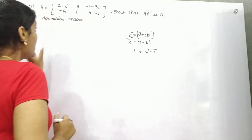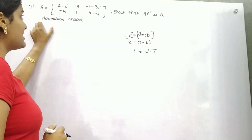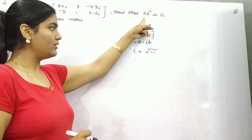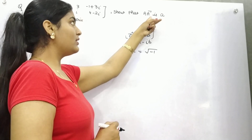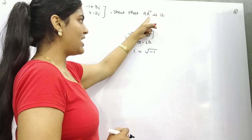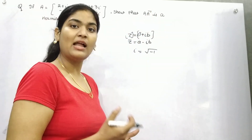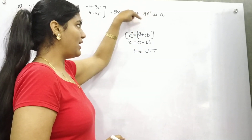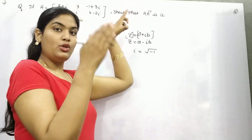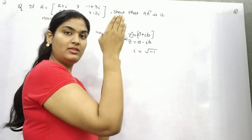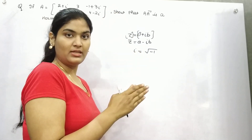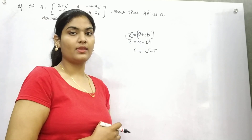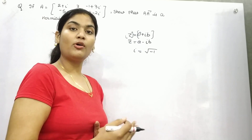Let's see. There is an example in which you have to prove that the multiplication of that matrix with the conjugate of the transpose of that matrix is a Hermitian. That means what we need to prove? That this resultant part, after solving, if you take the transpose of that particular resultant matrix, it should be equal to the conjugate.